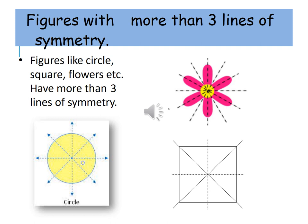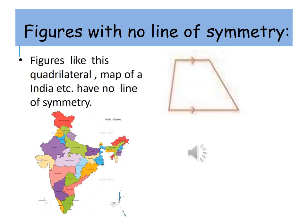Figures with more than three lines of symmetry: figures like a circle, square, flowers, etc. have more than three lines of symmetry. Figures with no line of symmetry: figures like this quadrilateral and the map of India have no line of symmetry.